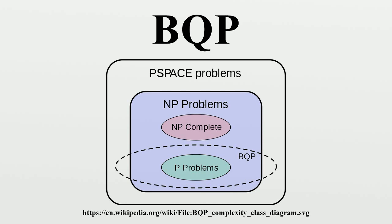BQP contains P and BPP and is contained in AWPP, PP, and PSPACE. In fact, BQP is low for PP, meaning that a PP machine achieves no benefit from being able to solve BQP problems instantly — an indication of the possible difference in power between these similar classes. As the problem of P versus PSPACE has not yet been solved, the proof of inequality between BQP and the classes mentioned above is supposed to be difficult.